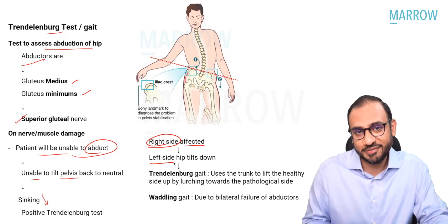Session two, question three: A feature of Klumpke's palsy involving the lower trunks. Options are wrist drop, ape thumb deformity, claw hand, or policeman's tip deformity. The correct answer is claw hand. Klumpke's palsy involves lower roots and trunks — C8, T1 — which is predominantly the ulnar nerve, so it is an ulnar plus median nerve injury giving claw hand. Wrist drop is radial nerve palsy; ape hand deformity is median nerve palsy; policeman's tip deformity is Erb's palsy.